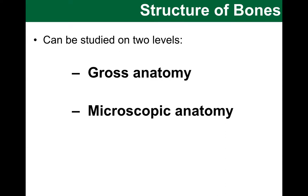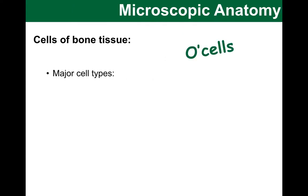Now, the other level of detail we should consider is the microscopic anatomy of the bone. For this we need to look at important cell types. Your textbook will include a little more detail, but there are a few cell types I want to highlight here. I call these O cells, and they are only found in the bone. Please note that these are all specialized forms of the same basic cell type.